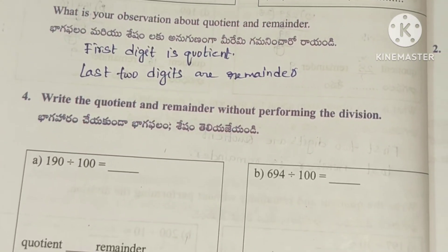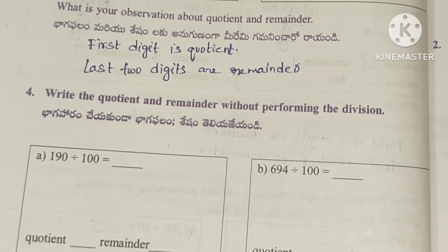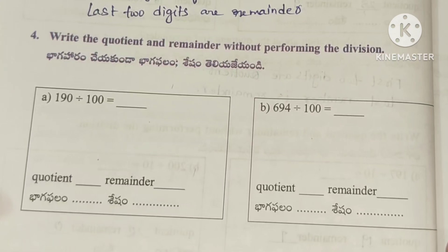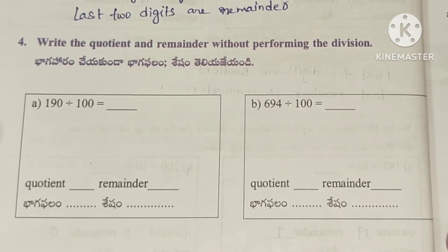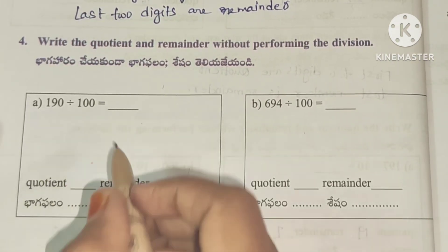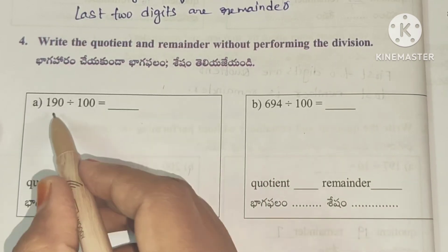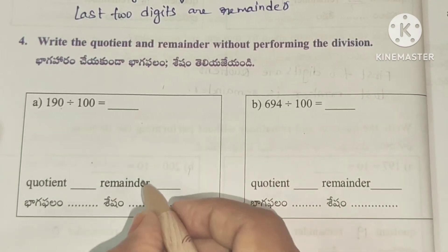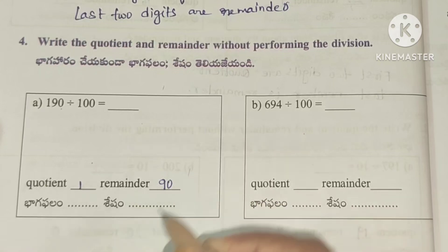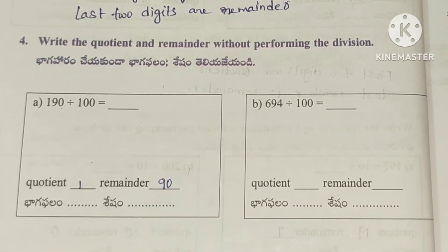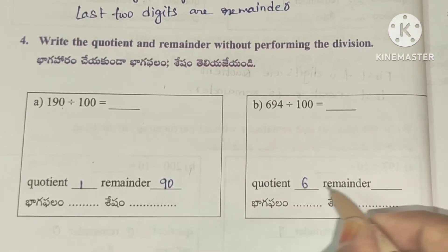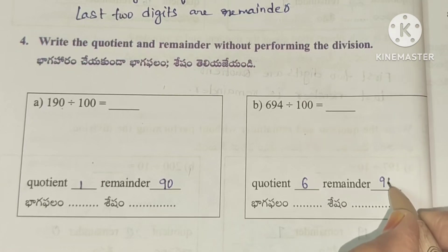Fourth question: write the quotient and remainder without performing the division. We will find the quotient and remainder. Quotient portion 6, remainder 94. Remainder 90.